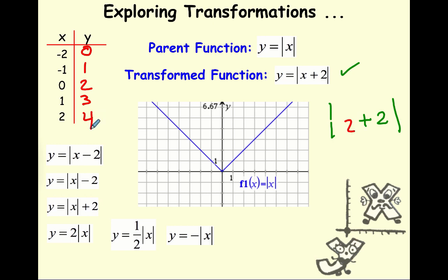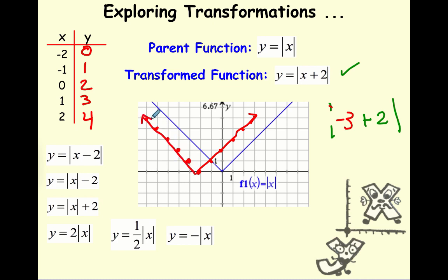So now I have the points: negative 2 comma 0, negative 1 comma 1, 0 comma 2, 1 comma 3, and 2 comma 4. Because it's still an absolute value function it has to look like a V with vertical symmetry, meaning for every point I have one that's the opposite side. For example, negative 3 plus 2 gives negative 1, and the absolute value of negative 1 is 1. The V originally from the parent function actually moved two units to the left.